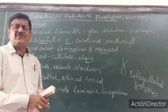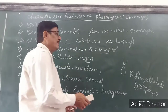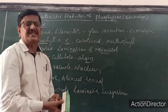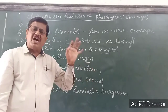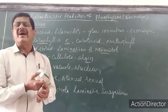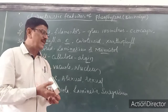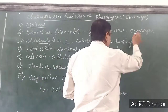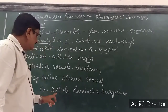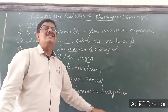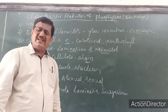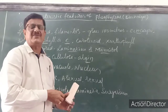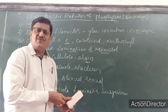In the sexual method of reproduction, there are three types: isogamy, anisogamy, and oogamy. These are the common features and examples of the class Phaeophyceae.